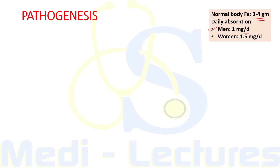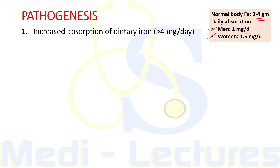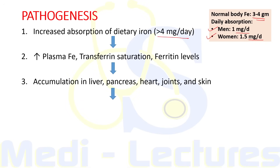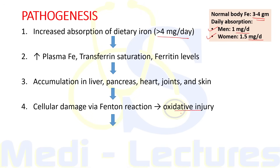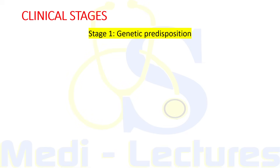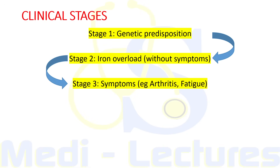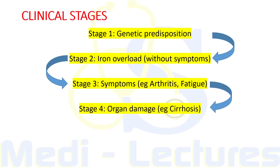Normal body iron stores are 3–4 grams. Daily absorption in men is around 1 mg/day and in menstruating women around 1.5 mg/day. In hereditary hemochromatosis, increased dietary iron absorption occurs — more than 4 mg/day — leading to increased plasma iron, transferrin saturation, and ferritin levels. Iron accumulates in the liver, pancreas, heart, joints, and skin. Cellular damage occurs via the Fenton reaction causing oxidative injury, fibrosis, and end organ damage. Disease stages progress from genetic predisposition (stage 1) → iron overload without symptoms (stage 2) → non-specific symptoms like arthritis and fatigue (stage 3) → organ damage like cirrhosis (stage 4).